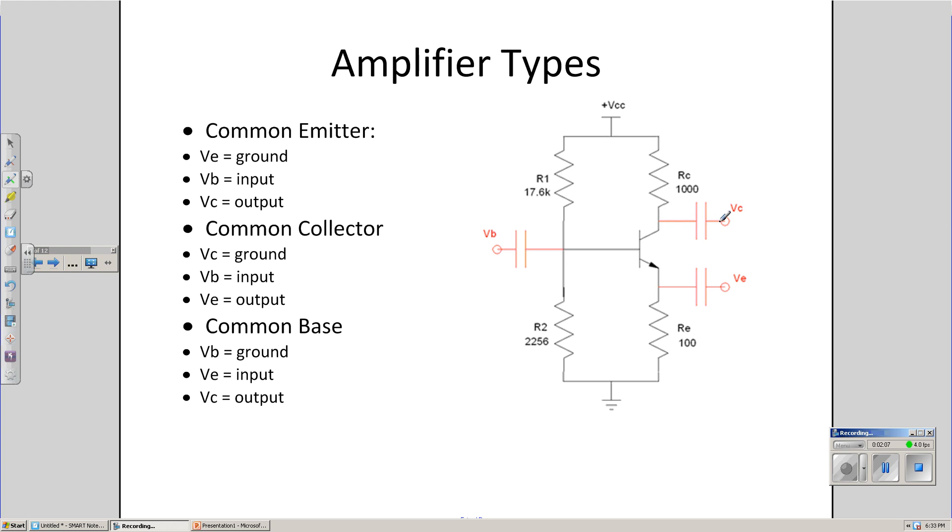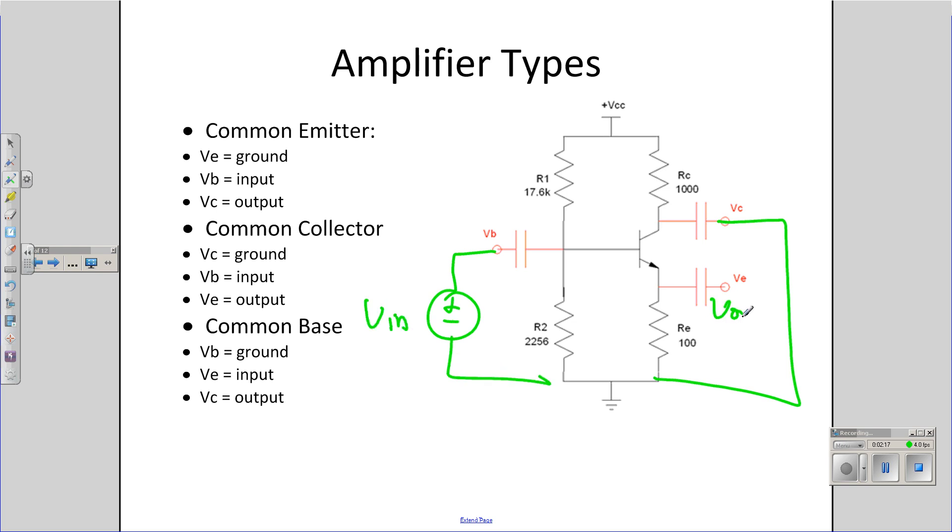Second option, I could take the collector, tie it to ground. In that case, this is my input, and here's my output. That's called a common collector amplifier. We'll look at that in the next video.